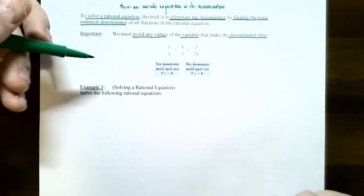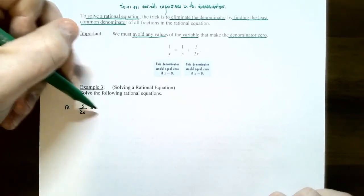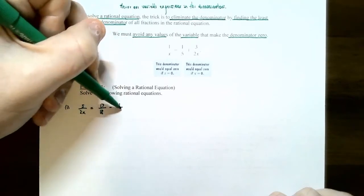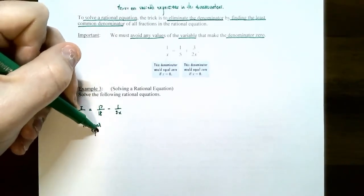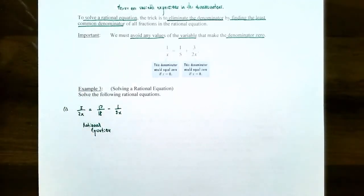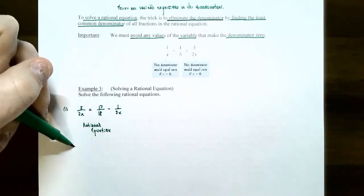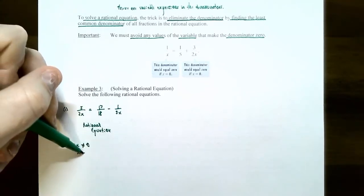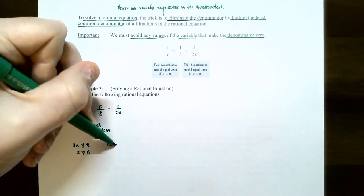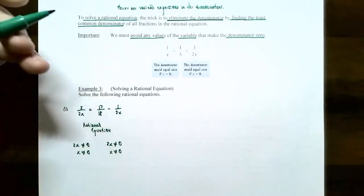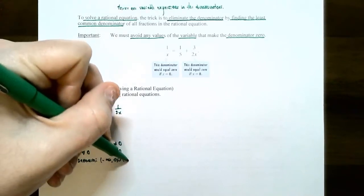Example 3: solve the rational equation. Number 1 — the equation is 5 divided by 2x equals 17 divided by 18, subtract 1 divided by 3x. This is a rational equation because there are x's in the denominator. Let's figure out what values of x we cannot have as a solution. The denominator of the first term is 2x — it cannot be 0, so x cannot be 0. The third fraction has 3x in the denominator, which also cannot be 0, so x cannot be 0 again. So the domain excludes 0 as a possible solution.